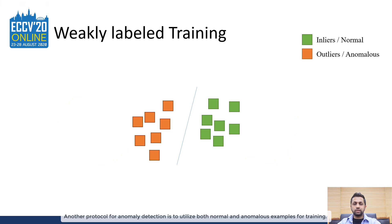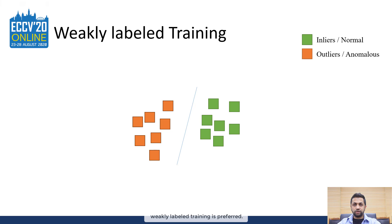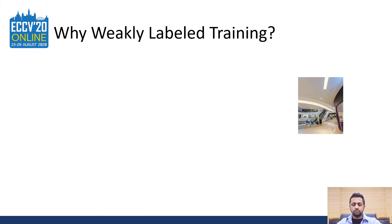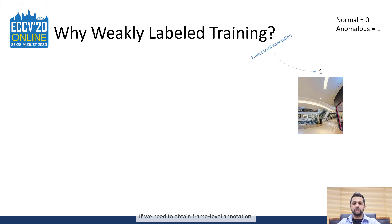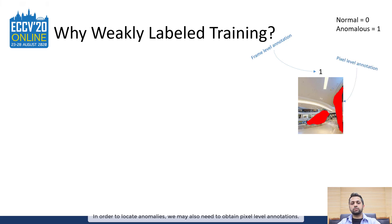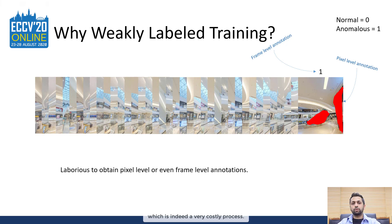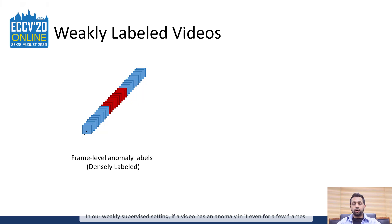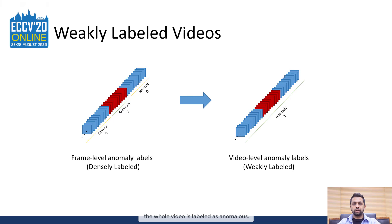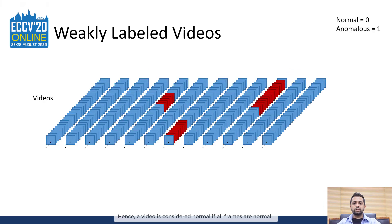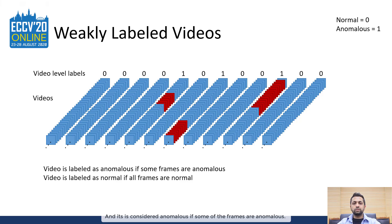Another protocol for anomaly detection is to utilize both normal and anomalous examples for training. However, to mitigate the necessity of obtaining fine-grained annotations, weakly-labeled training is preferred. To put things in perspective, if we need to obtain frame-level annotations, we can simply label a frame as normal or anomalous, or even obtain pixel-level annotations. But we have to repeat this process for hundreds of thousands of frames, which is indeed a very costly process. In our weakly supervised setting, if a video has an anomaly even for a few frames, the whole video is labelled as anomalous. Hence, a video is considered normal if all frames are normal, and anomalous if some of the frames are anomalous.